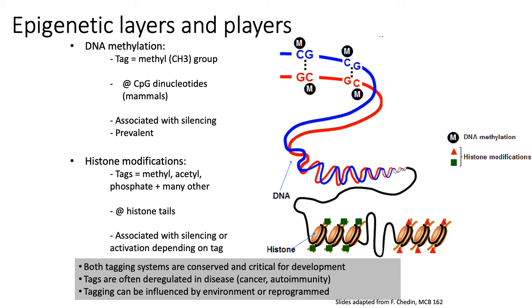Histone modifications are post-translational modifications to the tails of histone proteins. As a reminder, the genome doesn't exist as naked DNA in the nucleus — at the most basic level of organization, DNA gets wrapped around groups of histones to form nucleosomes, and the tails of those histone proteins can get modified, influencing gene regulation. Both DNA methylation and histone modifications are essentially context-dependent: the same modification can have different activating or repressing effects depending on what else is happening in the local genomic area.